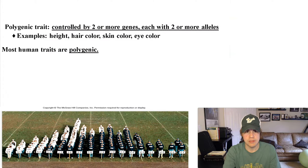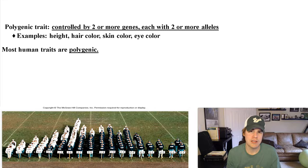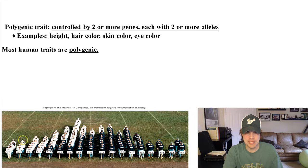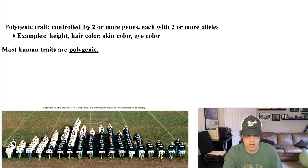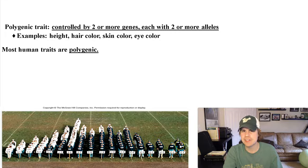Poly means many — polygenic traits are controlled by two or more genes. These are the more complex traits: height, hair color, skin color, eye color — all controlled by multiple different locations in our genome. Most human traits are polygenic. Here's an example with height — the majority of people fall in a bell curve, with very few at the extremes (five-footers and six-foot-fives) and the majority in the middle.